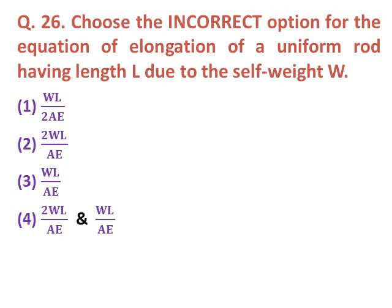Question twenty-five: Choose the incorrect option for the equation of elongation of a uniform rod of length L due to self-weight W. Option one: WL/(2AE). Option two: W×2L/(AE). Option three: WL/(AE). Option four: both 2WL/(AE) and WL/(AE).